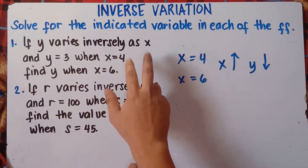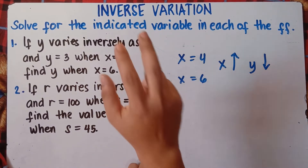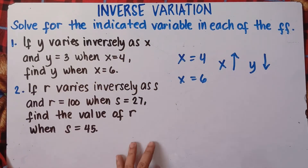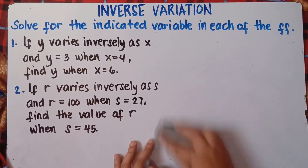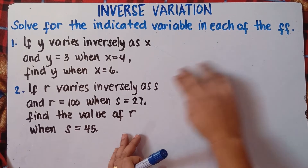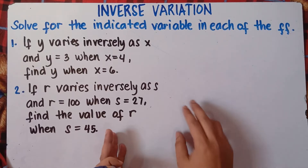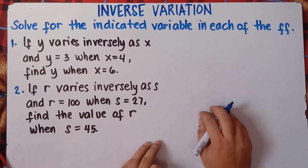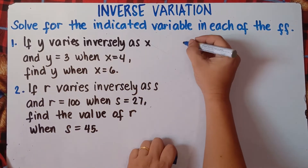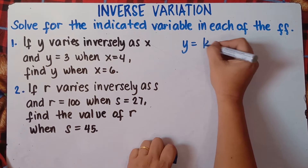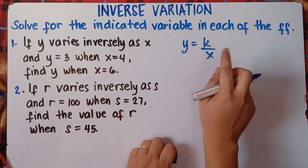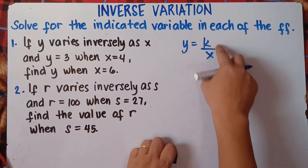The first thing you need to do is find k. Once you get k, just simply substitute k into the last equation. So write the equation: y varies inversely as x, so you write y equals k over x. If you have the word 'inversely,' there's something to do with division.